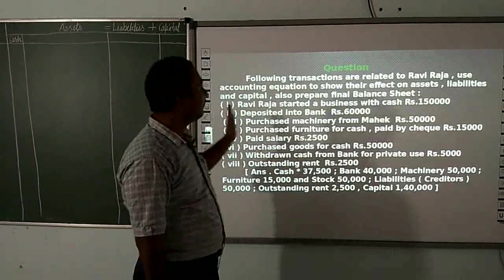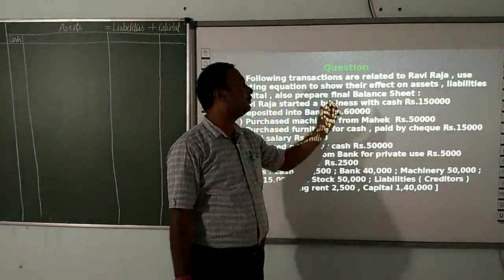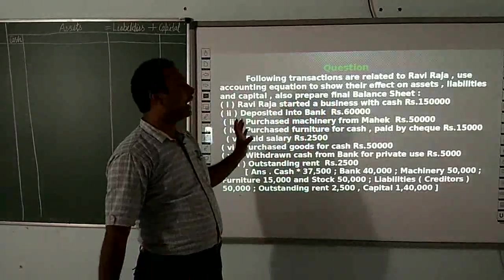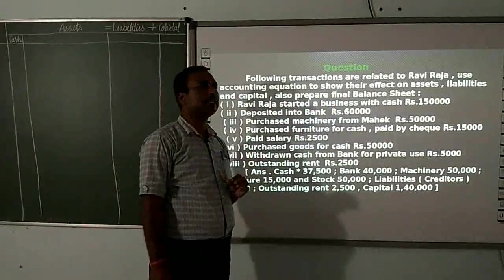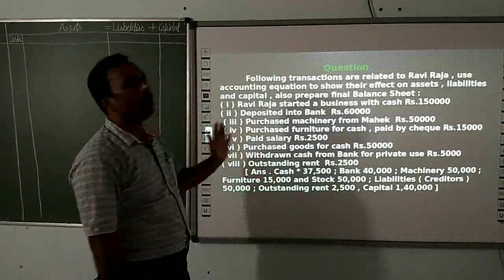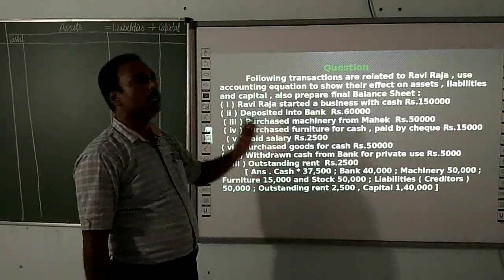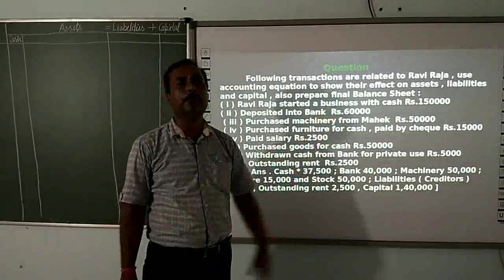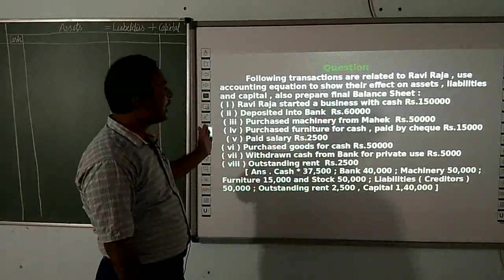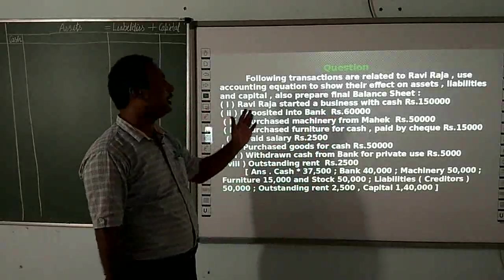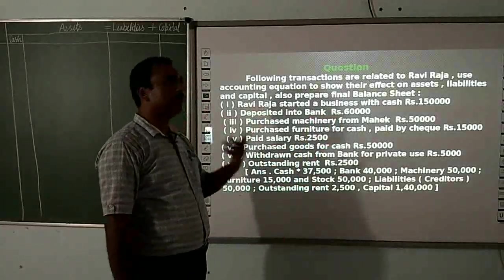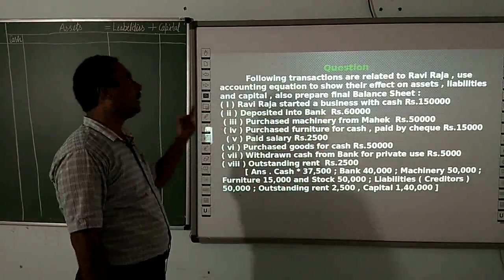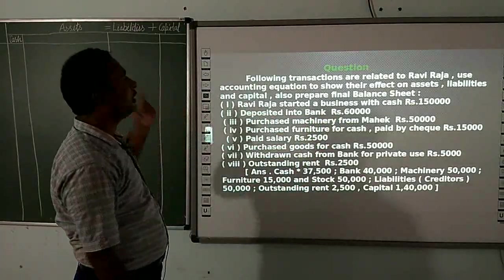The first transaction is: Raviraja started a business with cash of Rs. 1,50,000. So cash will be affected and capital will be affected. Cash will increase by 1,50,000 and capital will also increase by 1,50,000. The second transaction is: deposited into bank Rs. 60,000 — bank balance will increase, and since bank is an asset, the asset will increase.